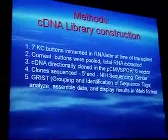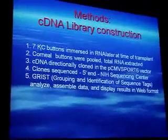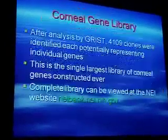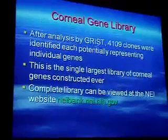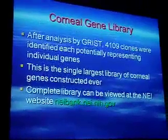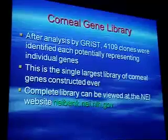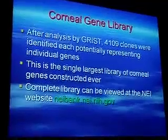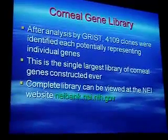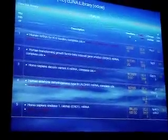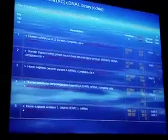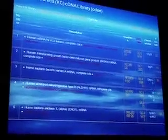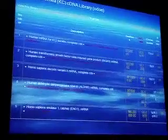With Graham Worcester of the NEI, I supplied him about seven corneal keratoconus buttons and using several techniques, he came up with a library showing 4,109 clones, each potentially representing individual genes. This is the single largest library of corneal genes ever constructed, and the complete library can be viewed at the NEI website at nei.nih.gov. The library lists the gene name, the JPEG number, the UniGene number, and the number of clones — very useful when you want to compare expression of keratoconus versus normals or other diseases.